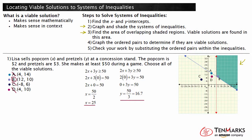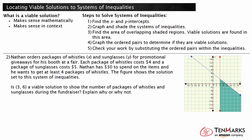Let's go on to our next example. Nathan orders packages of whistles x and sunglasses y for promotional giveaways for his booth at a fair. Each package of whistles costs $4 and a package of sunglasses costs $5. Nathan has $30 to spend on the items and he wants to get at least four packages of whistles. The figure shows the solution set to this system of inequalities. Is (3, 6) a viable solution to show the number of packages of whistles and sunglasses during the fundraiser? Explain why or why not.